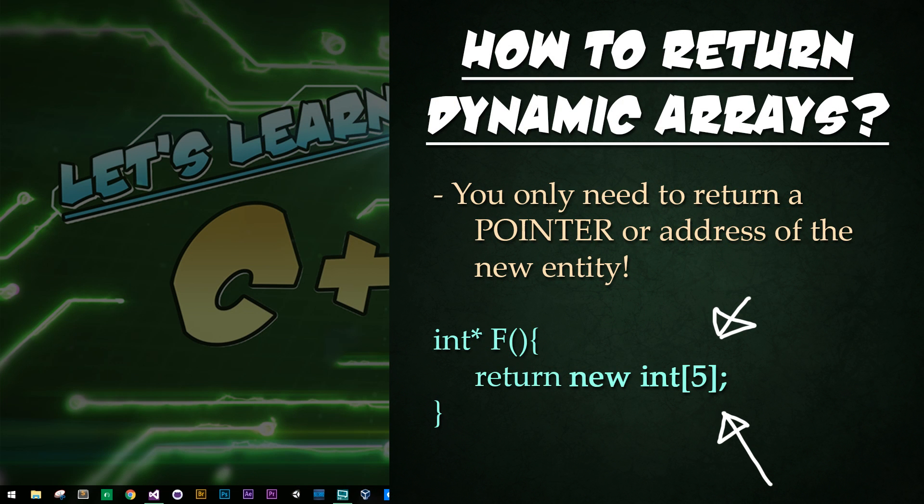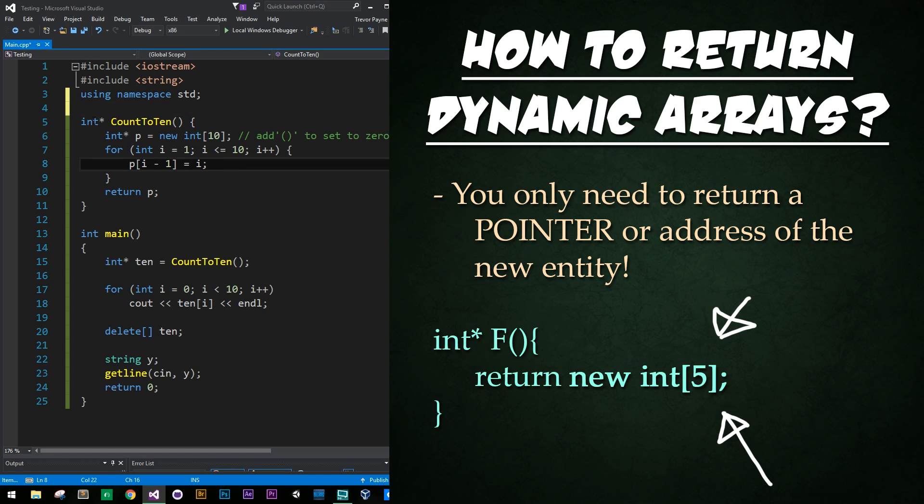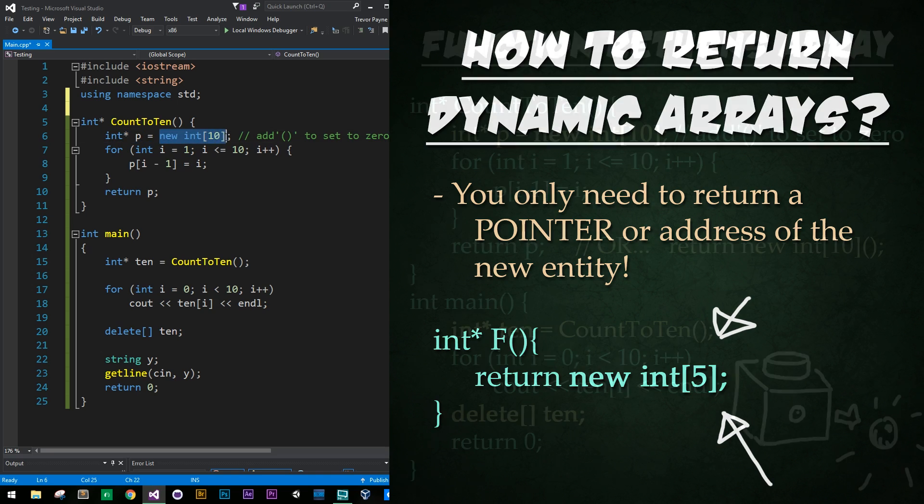How do you handle dynamic array creation within functions? Well, it's actually pretty simple. What you're going to do is set your return type to be an int pointer, and then you're just going to return that pointer that you allocate the new memory to and return that. You could also return the new instance created without the need to create a temporary variable.